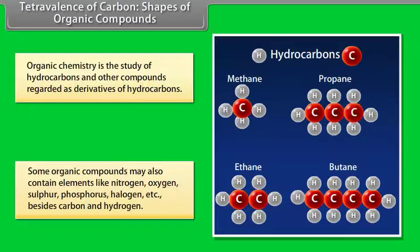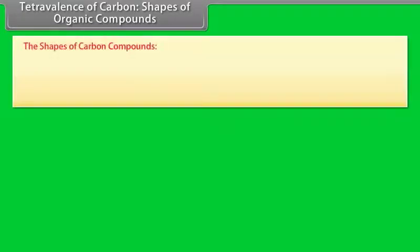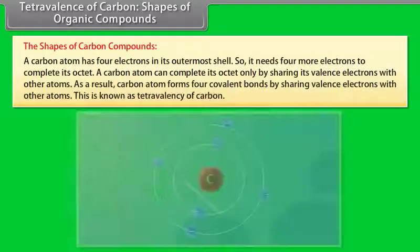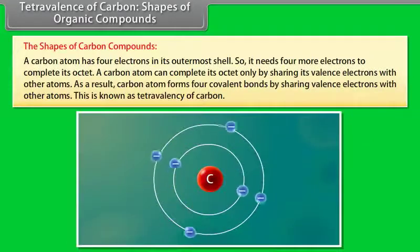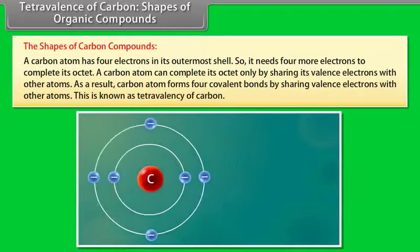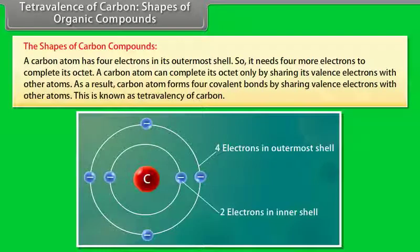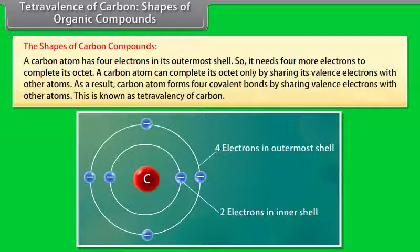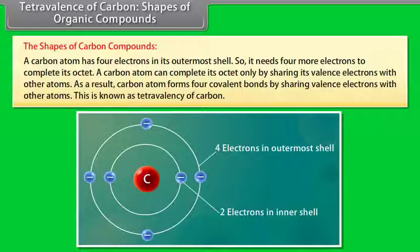The shapes of carbon compounds. A carbon atom has 4 electrons in its outermost shell, so it needs 4 more electrons to complete its octet. A carbon atom can complete its octet only by sharing its valence electrons with other atoms. As a result, a carbon atom forms 4 covalent bonds — this is known as the tetravalency of carbon.